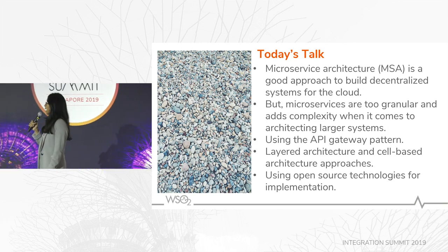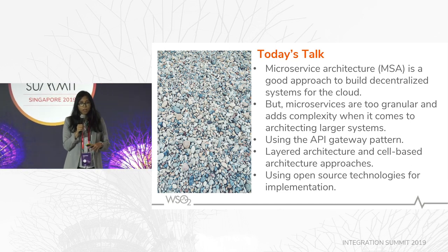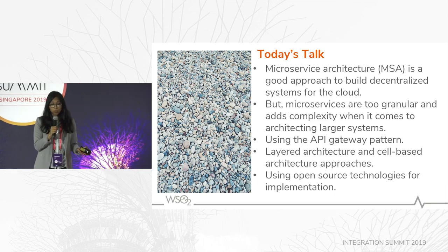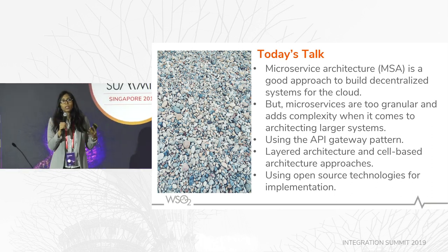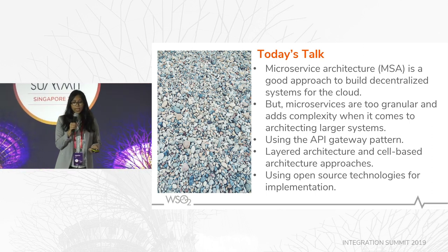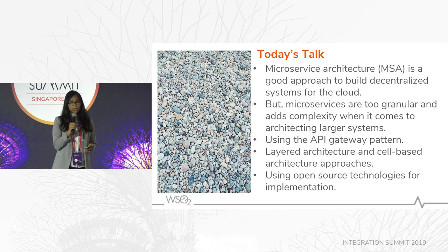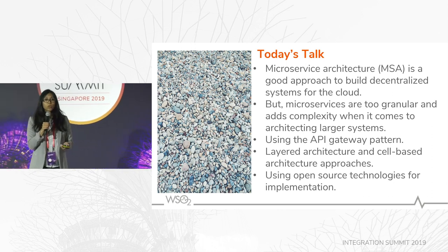We talked about why microservice architecture is a good approach to building decentralized systems for the cloud. But it also comes with its own set of problems — it's too granular and complex when architecting larger systems. One concern is how client applications should access these microservices. Using the API gateway pattern is one good approach, and based on this pattern you can follow a layered architecture which segments your microservice architecture into layers. Alternatively, you can use the cell-based architecture approach. We'll discuss how these architecture patterns can be implemented using open source technologies.